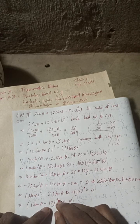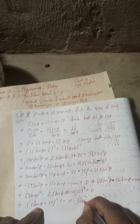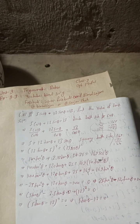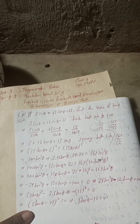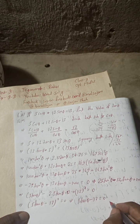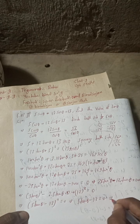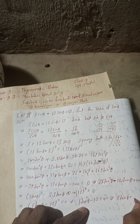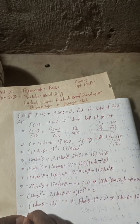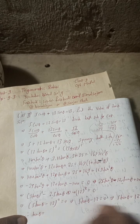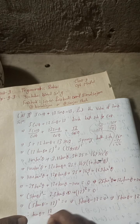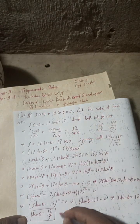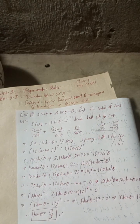Taking the square root of both sides: 5tanθ − 12 = 0. This implies 5tanθ = 12. Therefore, tanθ = 12/5. This is the required value of tanθ for this question.